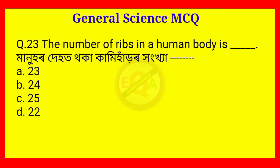Question number 23. The number of ribs in a human body is? The answer is Option B — 24.